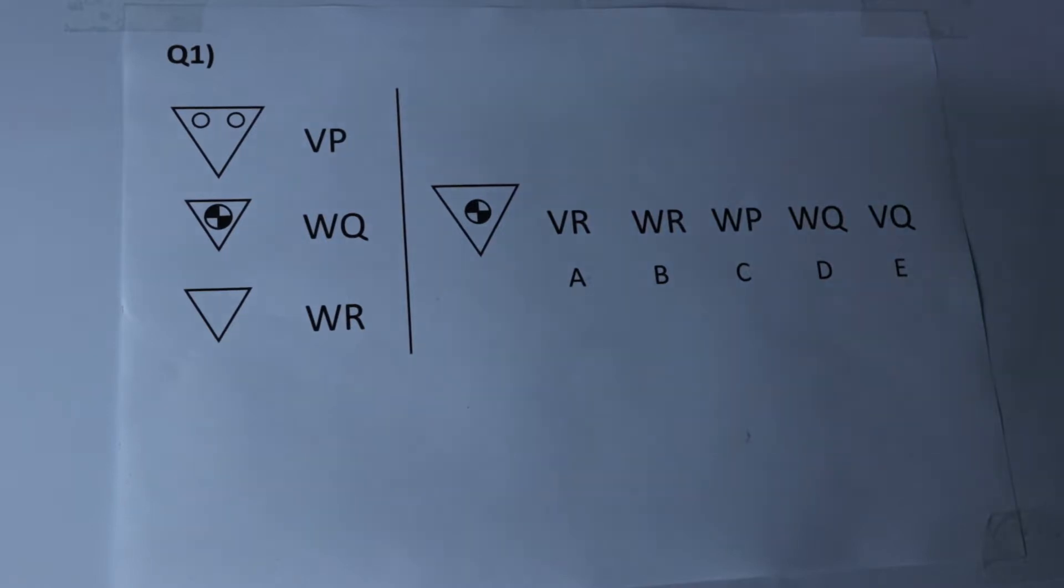Now here we're given three shapes down the left hand side. Alongside each shape is a two letter code and what we've got to do is try and figure out what each letter is representing. Now to do this we're going to isolate each letter just like we did in previous videos in other code type questions.